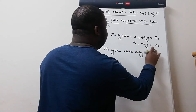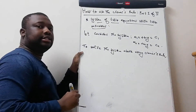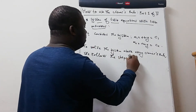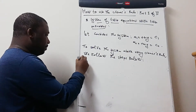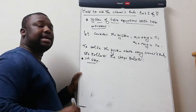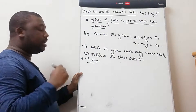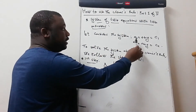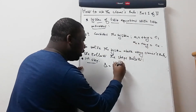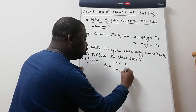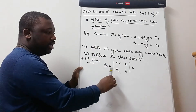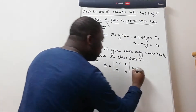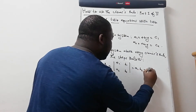The first step is to find the determinant of the whole system, which we call Delta. How do you find it? You take the coefficients in front of x and y: a1, a2, then b1, b2. To get this determinant you do: a1 times b2 minus a2 times b1.